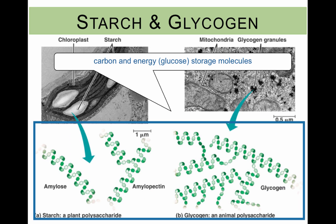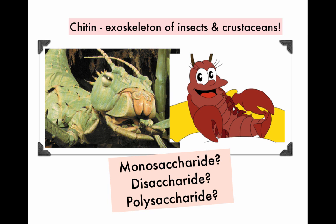Starch and glycogen are examples of polysaccharides. Starch is a plant polysaccharide whereas glycogen is an animal polysaccharide. These two are carbon and energy storage molecules in the form of glucose. Something interesting is that chitin is actually found in the exoskeleton of insects and crustaceans. Do you remember whether it's a monosaccharide, a disaccharide or a polysaccharide? We'll answer it in class.